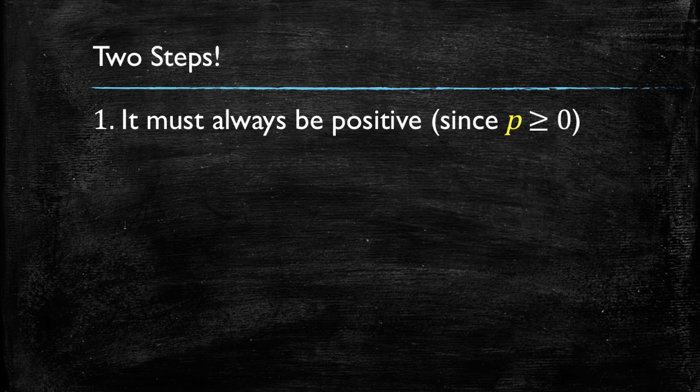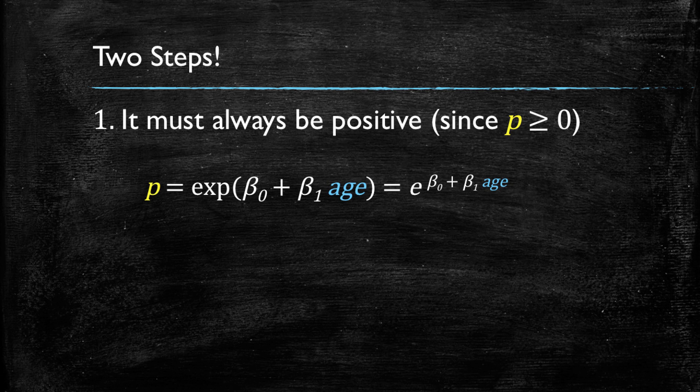And an alternative to this is an exponential form, whereby the exponent of beta 0 plus beta 1 times age, which is the same as saying e powered to beta 0 plus beta 1 times age, is always going to be positive. You can check it in Excel or in some other software. It's always going to be positive.